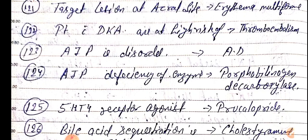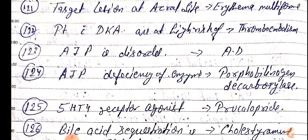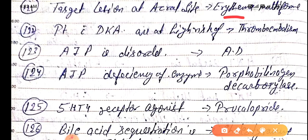Good morning doctors, welcome again. Today we are going to discuss NEET PG 2021 important one-liners, this is Part 13. Target lesion of acral site is seen in erythema multiforme — this is mainly seen in erythema multiforme.